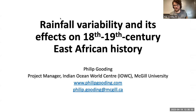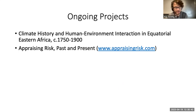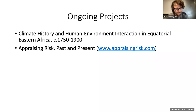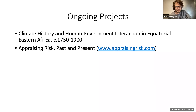Today Philip is going to talk about rainfall variability and its effects on 18th to 19th century East African history — research that expands conceptions of terrestrial regions of East Africa, signifying the global significance of East African history. This project comes from a wider project called Climate History and Human Environment Interaction in Equatorial Eastern Africa, circa 1750 to 1900, which itself is part of a wider project at the Indian Ocean World Centre entitled Appraising Risk Past and Present, both funded by the Social Sciences and Humanities Research Council of Canada.